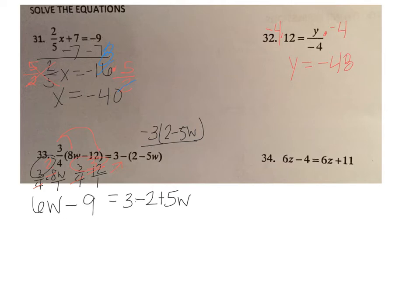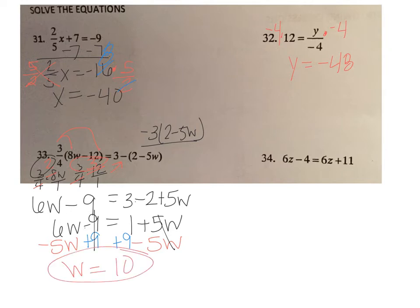And we'll combine our like terms on the right side of the equation. 1 plus 5w equals 6w minus 9, and then I'm going to get my variables on one side, minus 5w, minus 5w, and my constants on one side, plus 9, plus 9. You see that they equal 0 here, they equal 0 there, so I get w equals 10, and that's my final answer.